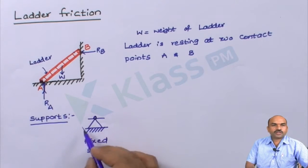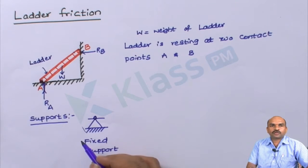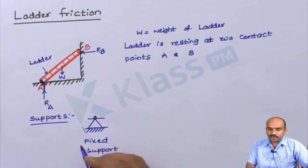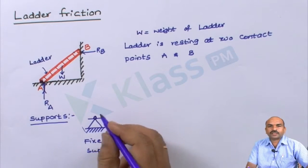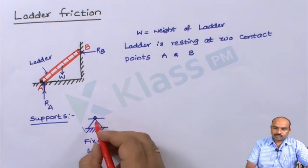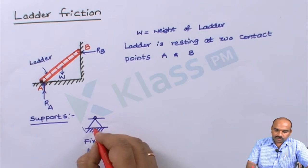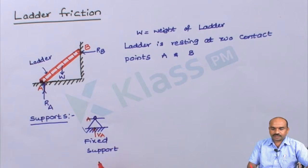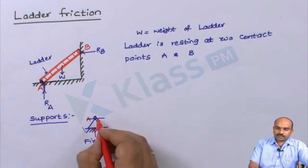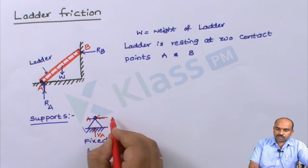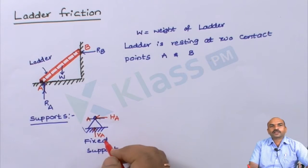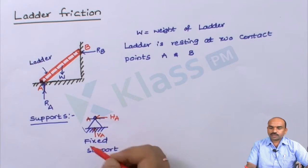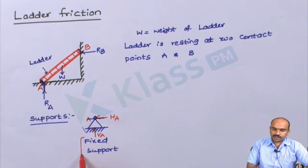When this support is a fixed support, the body will not move in the horizontal direction and the body will not move in the vertical direction because there will be reactions. Its weight is acting downward, so there will be a vertical reaction at point A and there will be a horizontal reaction also, depending on the orientation of the supports. This support is called a fixed support.